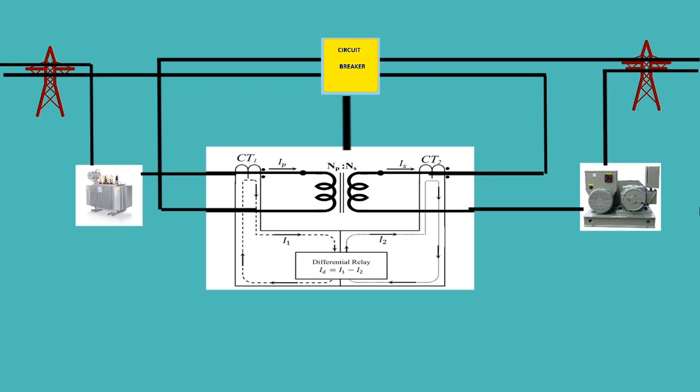Here we have a system where the transformer and motor is connected to a differential relay and these two are fed from two different lines.